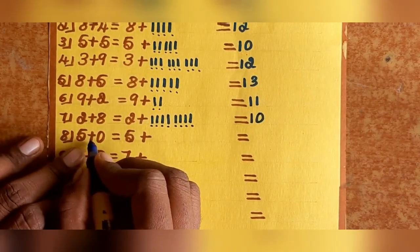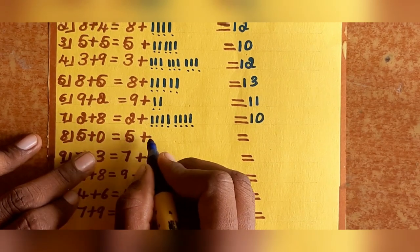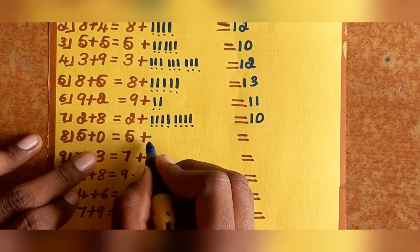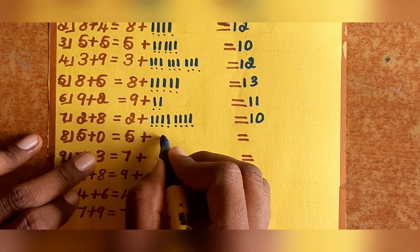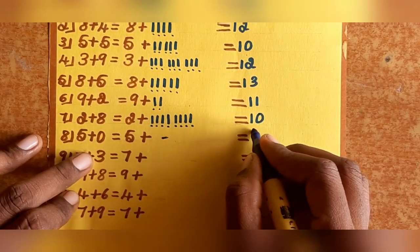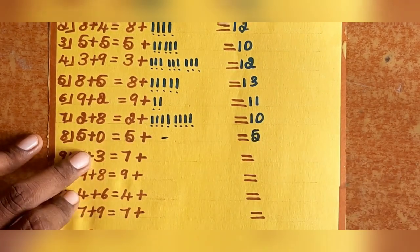Example 9: 5 plus 0. Keep 5 in your mind and add 0. If you add any number with 0, only write that number. So 5 plus 0 equals 5.